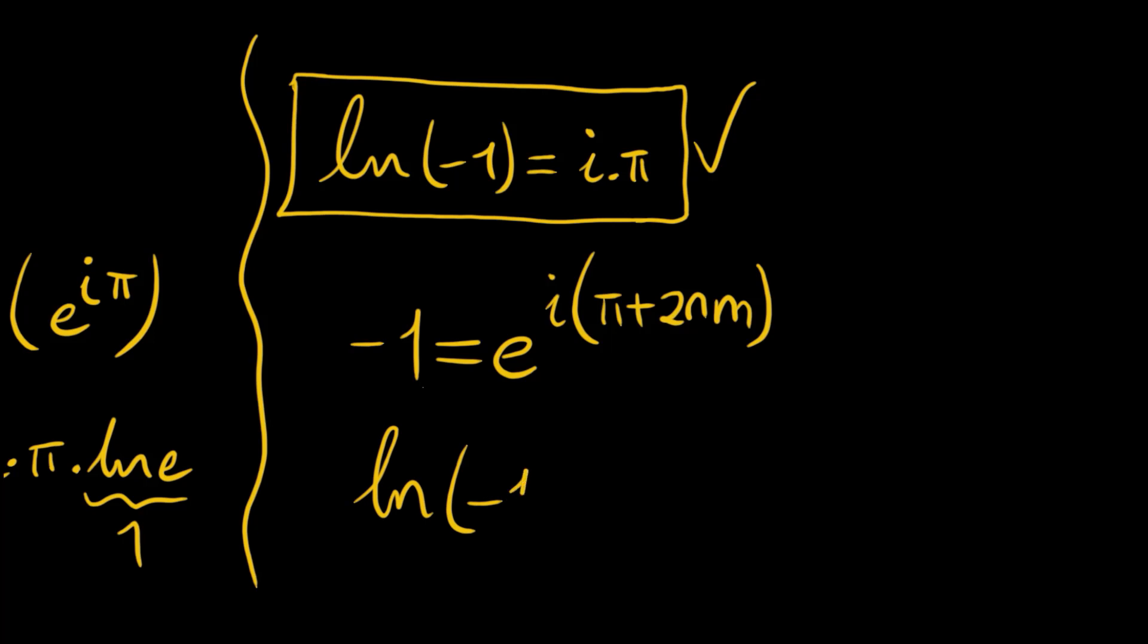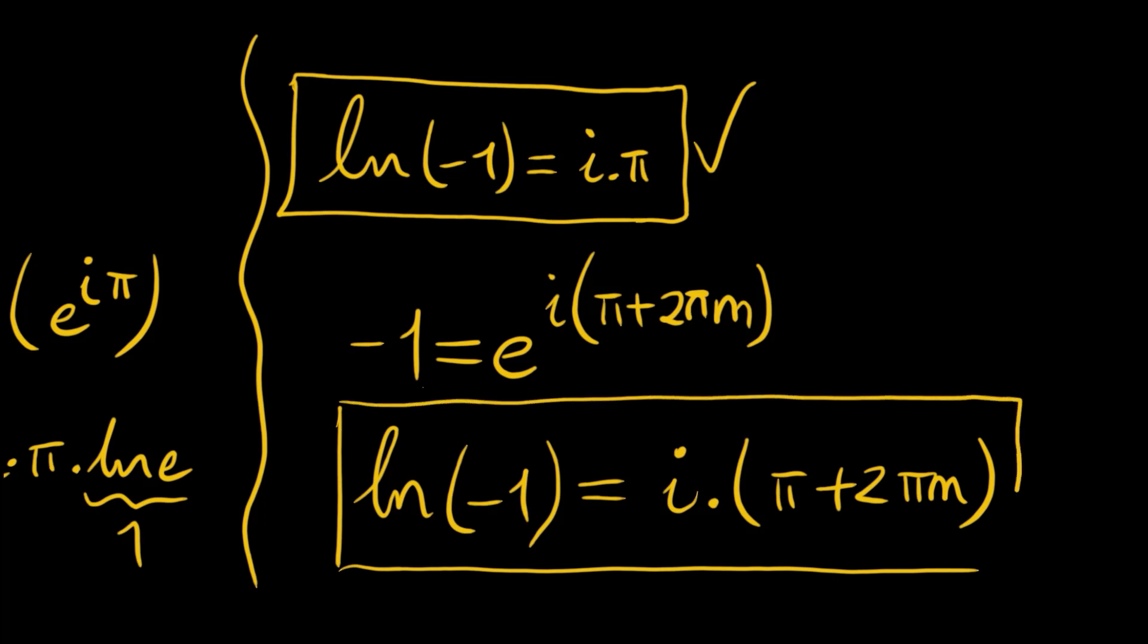So the general solution is ln negative 1 is equal to i times pi plus 2 pi m, for m being any integer. Thank you for watching and see you in the next videos.